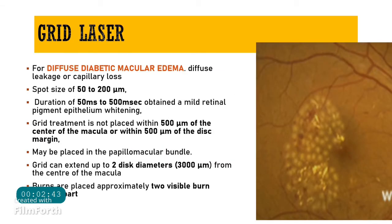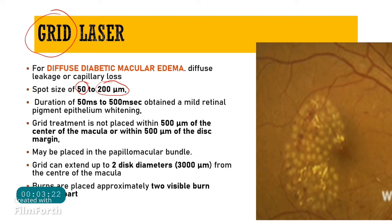The second type of laser therapy for DME is grid laser therapy. While focal laser treats individual focal lesions, grid laser is used for diffuse diabetic macular edema, where there are diffuse areas of capillary leakage and capillary loss seen on fundus fluorescent angiography. In grid therapy, multiple spots of laser are applied to the retina in the pattern of a grid.